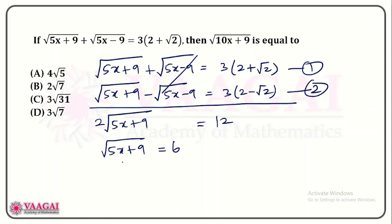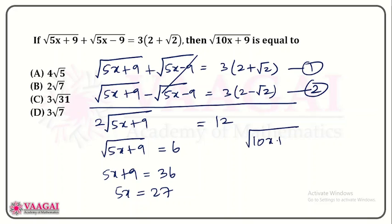So root of 5x plus 9 equals 12 divided by 2, which is 6. Squaring both sides, 5x plus 9 equals 36, so 5x equals 36 minus 9 equals 27. Now we need to find root of 10x plus 9. Since 5x equals 27, we know 10x equals 54.